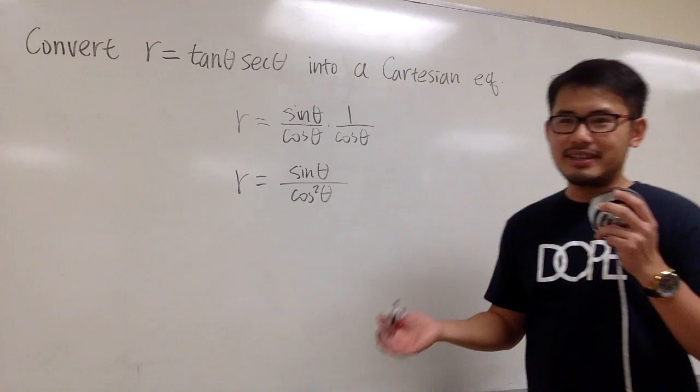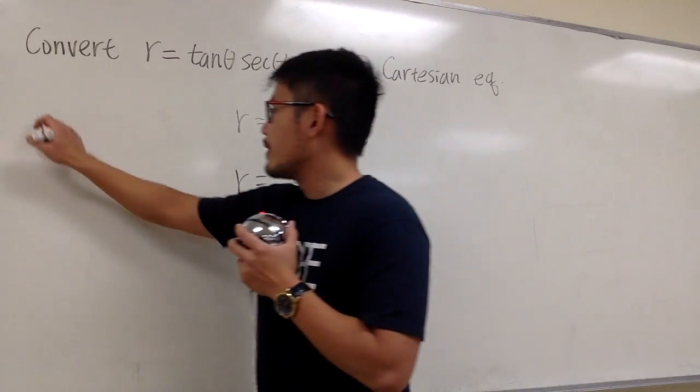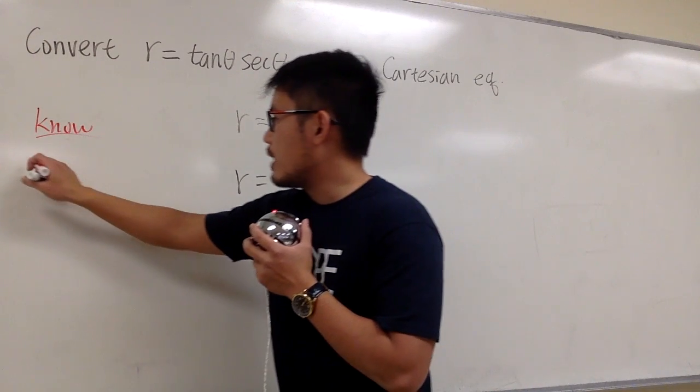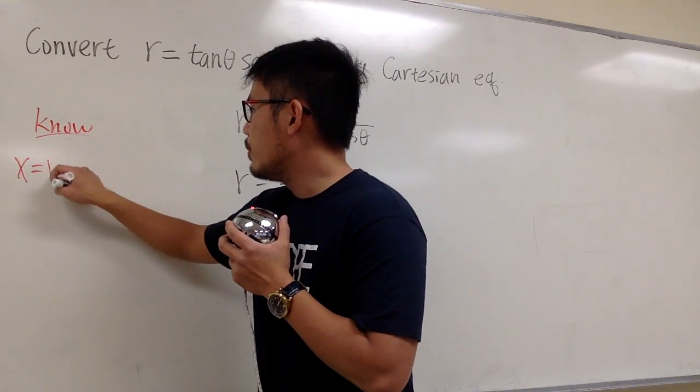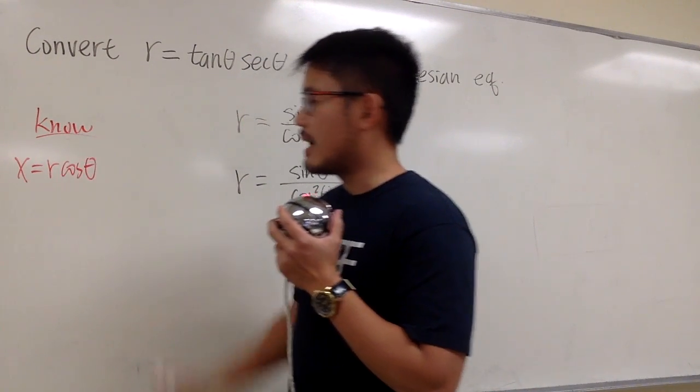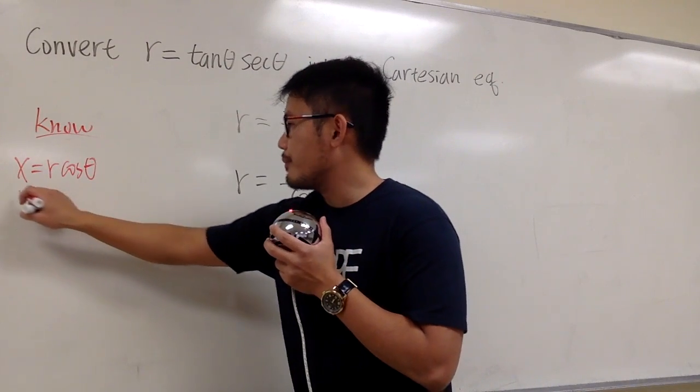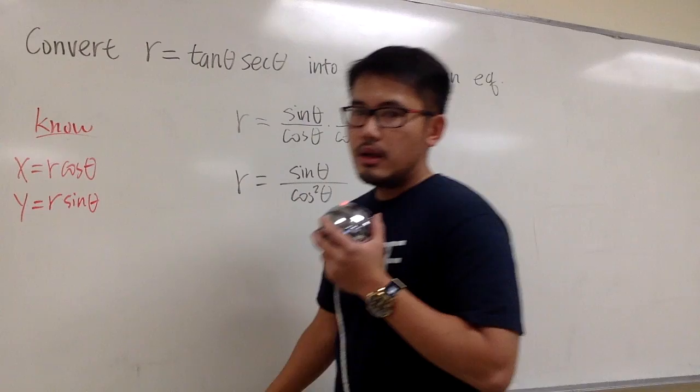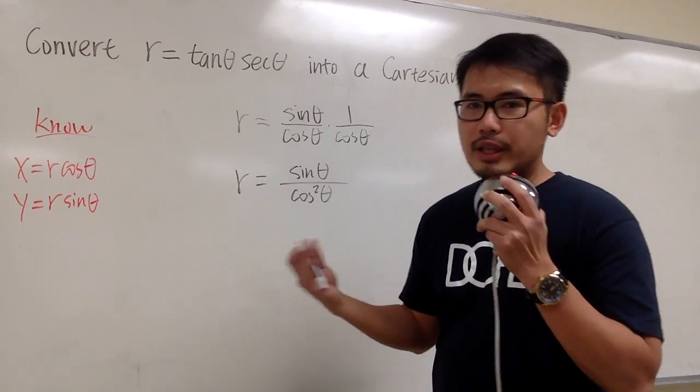Well, we need to know some connections now, right? So this is what we have to know. First, let me write down, we know x is equal to r times cosine theta. And likewise, we also know y equals r times sine theta.